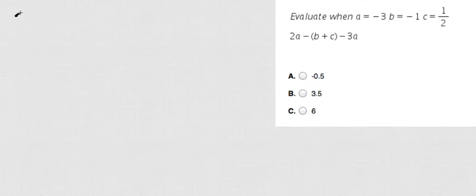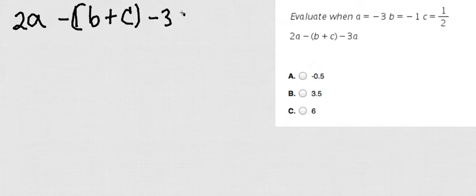Okay, so we have an expression which is 2a minus, and then parenthesis, b plus c minus 3a. They tell me that a is negative 3, b is negative 1, and c is 1 half.